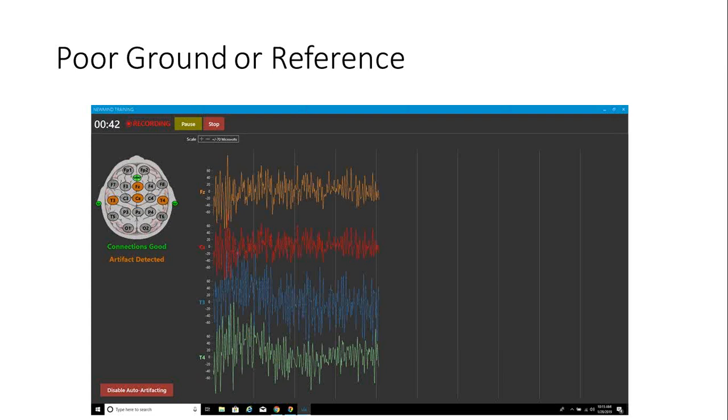Here we have a poor ground or reference. That produces something that looks like a lot of beta but there's also quite a bit of delta. If the ground is not connected well or the reference is not connected well, this is the pattern you see. This is very poor EEG. This is the pattern most people struggle with when they first start brain mapping. They put the gel in the cap and can't quite get a good connection.